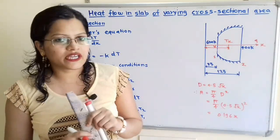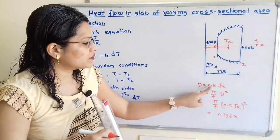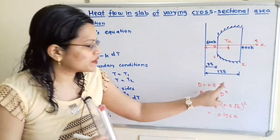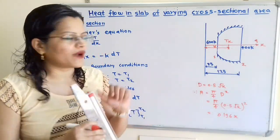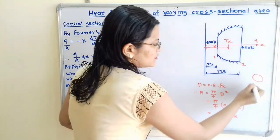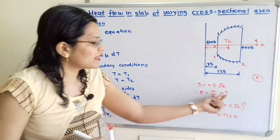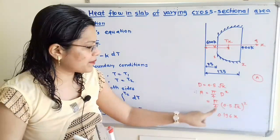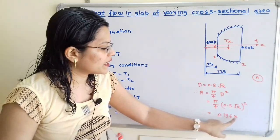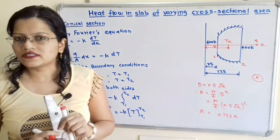From the given question, diameter D = 0.5√X. For a circular cross section, area A = (π/4)D². Substituting D in terms of X: A = (π/4)(0.5√X)² = 0.196X. So the area is equal to 0.196X, which is a function of X.